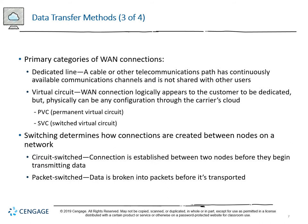The primary categories of WAN connections are: a dedicated line, which is a continuously available communication channel not shared with other users; or a virtual circuit which logically appears dedicated to the customer but can physically traverse any configuration in the carrier's cloud. These fall into permanent or switched virtual circuits. When you hear PVC in networking, it's important to understand whether we're talking about polyvinyl chloride physical cable or a permanent virtual circuit. Circuit switching establishes a connection between two nodes before transmitting data; packet switching breaks data into packets before transport.